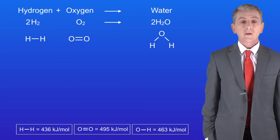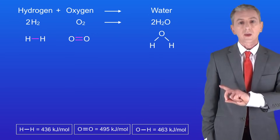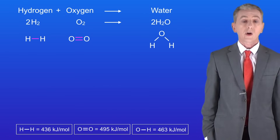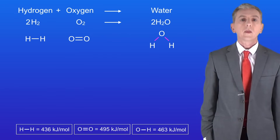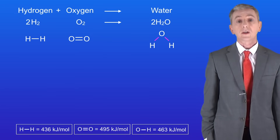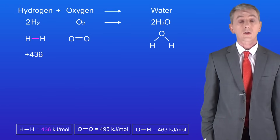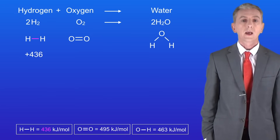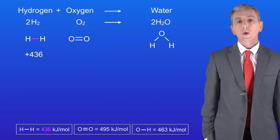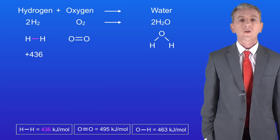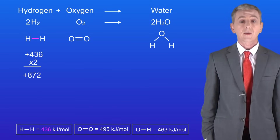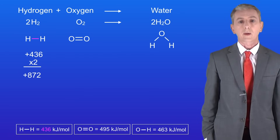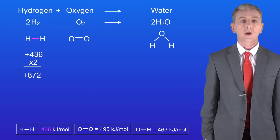On the left hand side we've got to break these bonds, and on the right hand side we're going to make these bonds. The energy needed to break the bond between two hydrogen atoms is 436 kilojoules per mole. However, we've got two molecules of hydrogen so we've got two of these bonds. We need to put in 872 kilojoules. The positive sign shows us that we're putting energy in to break these bonds.